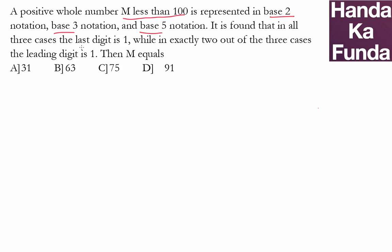It is found that in all three cases, the last digit is 1. What does this mean when the last digit is 1? This means when you divide this number m by 2, your remainder will be 1. When you divide this number m by 3, your remainder will be 1. When you divide this number m by 5, your remainder will be 1.